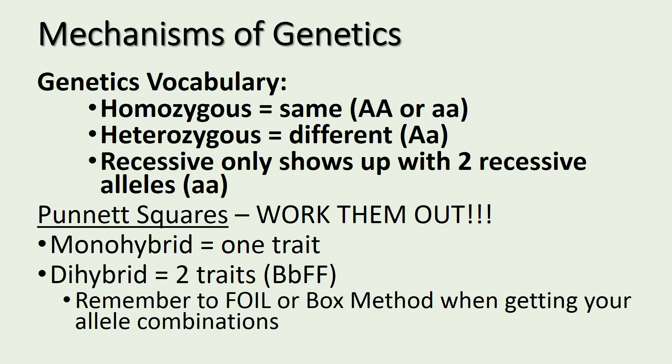When you get to your Punnett Square questions, make sure you work them out. First, write the parent genotypes out and then solve the problem. If you get a monohybrid cross, you'll be crossing one trait only and it will have four boxes. If you get a dihybrid cross, you'll be crossing two traits and you'll need to use the foil or box method to work it out. Remember, dihybrid crosses are going to have 16 boxes, so take your time and do your best.